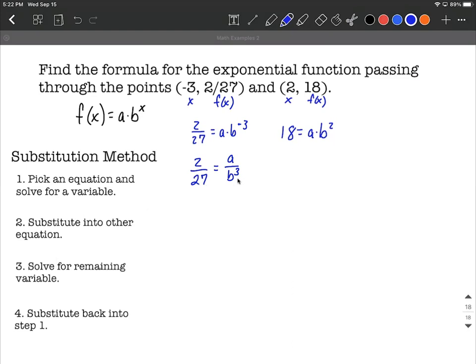What I'm going to do is try to solve for a by multiplying both sides by b cubed. By multiplying by b cubed, that's going to isolate a on the right hand side all by itself. I'm going to write this as two twenty-sevenths multiplied by b cubed. That completes the first step of the substitution method.